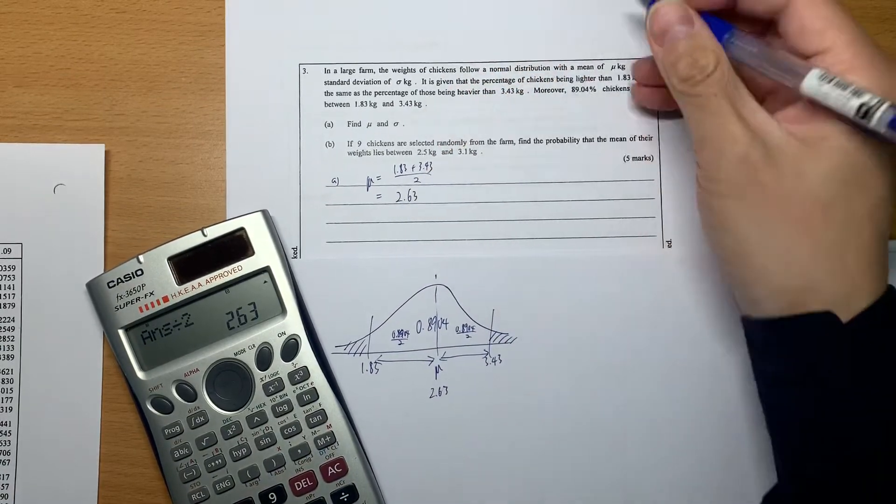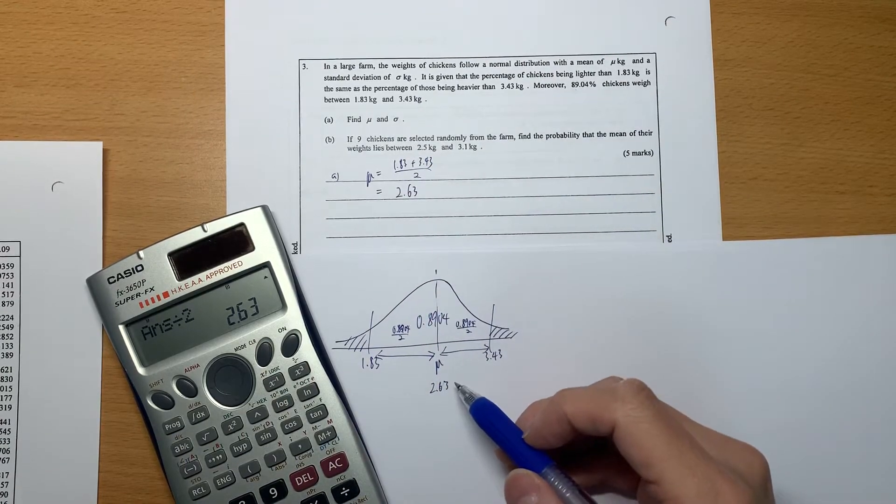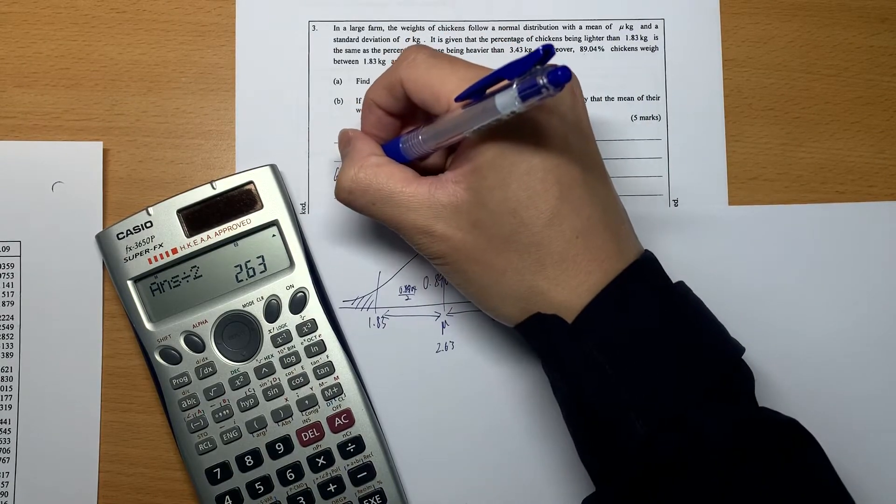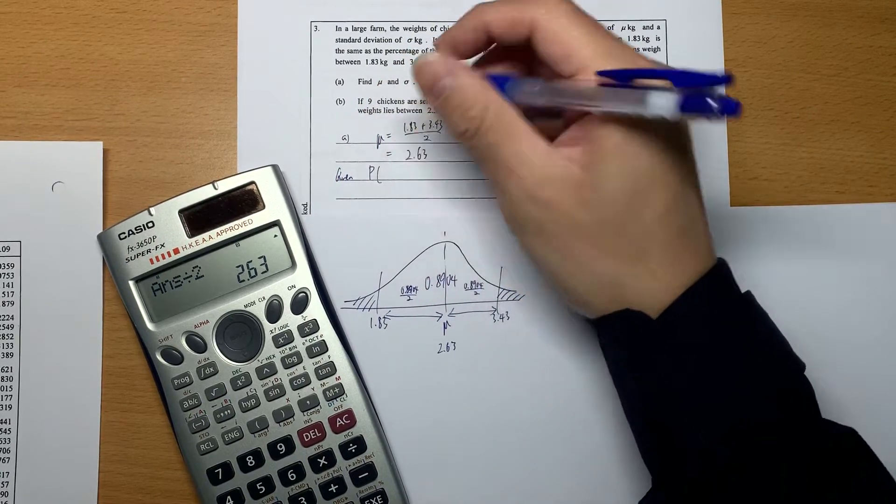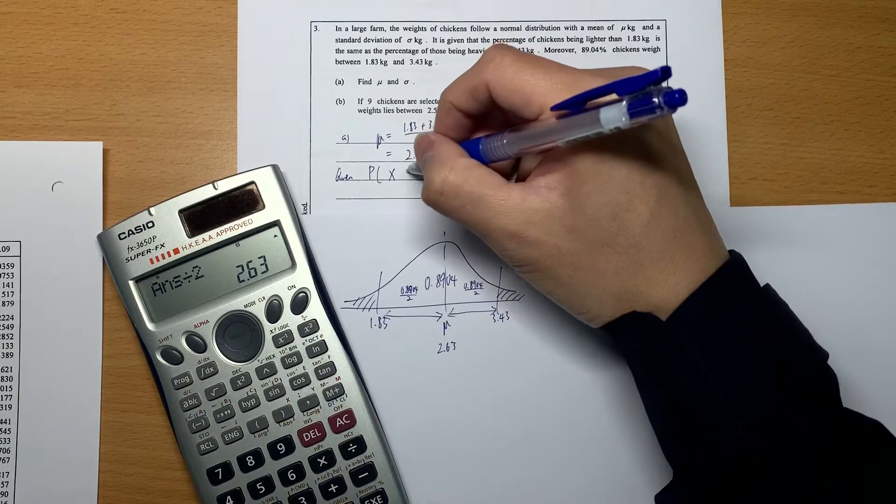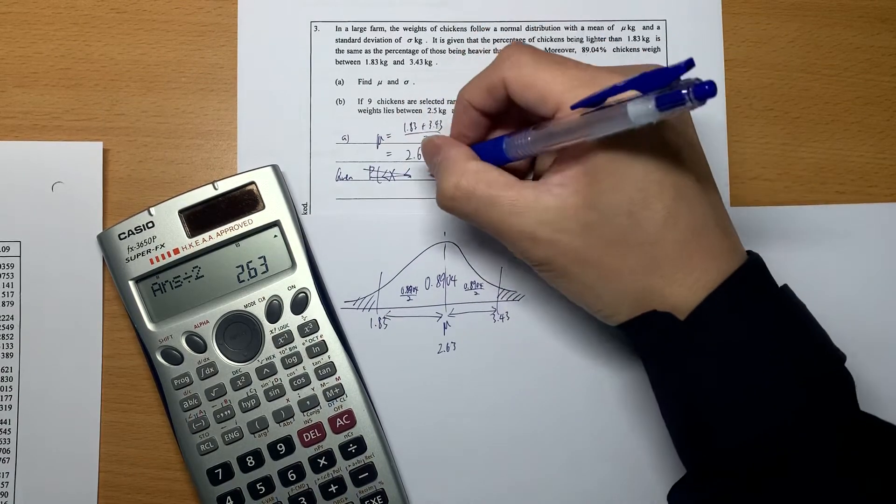After that, they say find σ. We have the mean, then it's really easy for us to get the σ. Let our weights be X and then it's smaller than 3.43.